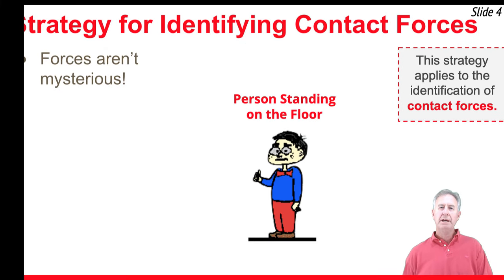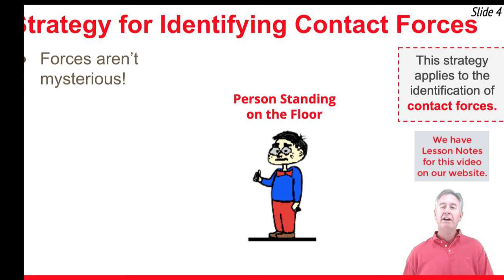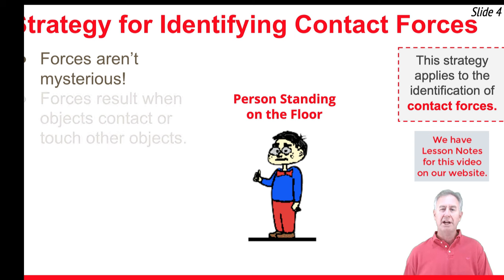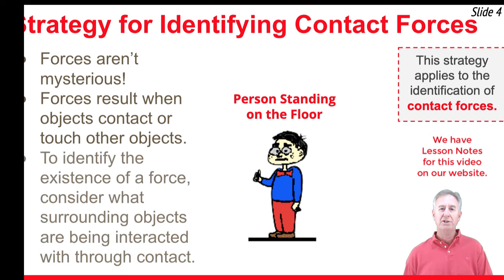We'll begin with a strategy for identifying the contact forces that act upon an object. The strategy is built on the presumption that forces simply aren't mysterious. Forces result when one object touches another object. So if we want to find the forces that act upon an object, we ask: what is the object touching?